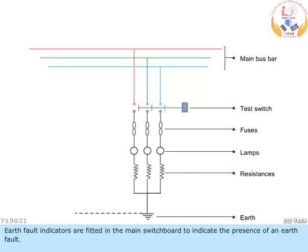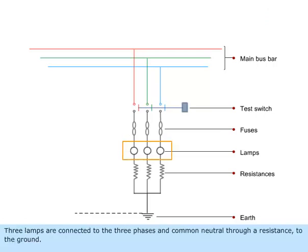Earth fault indicators are fitted in the main switchboard to indicate the presence of an earth fault. Three lamps are connected to the three phases and common neutral through a resistance to the ground.